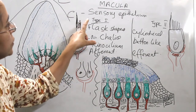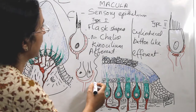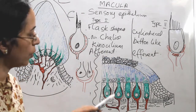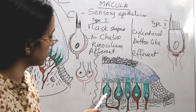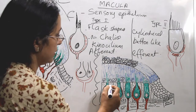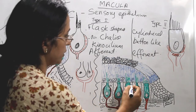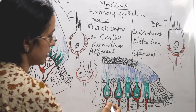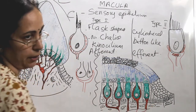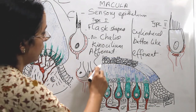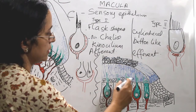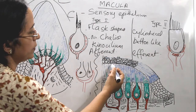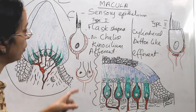To summarize the structure of the macula: there is a sensory epithelium with type 1 and type 2 sensory cells plus supporting cells on a basement membrane. Over the sensory epithelium is the otoconial membrane containing a honeycomb mesh, above which is gelatinous material, and at the top of the gelatinous layer are the otoconia or otoliths.